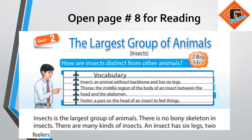Second vocabulary word is Thorax: the middle region of the body of an insect, between the head and the abdomen. Third word is Feeler: a part on the head of an insect used for sensing.